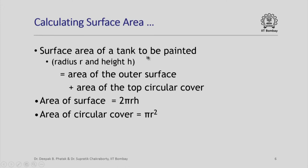The surface area of a tank to be painted, which has radius r and height h, is equal to the area of the outer surface plus the area of the top circular cover. Our geometry knowledge tells us that the area of the outer surface is 2πrh, where r is the radius and h is the height. In exactly the same way, the area of the circular cover will be πr². Once we know these two areas, their summation will be the total area.